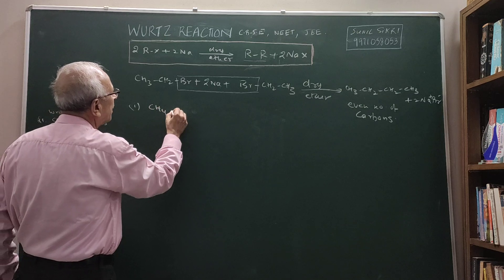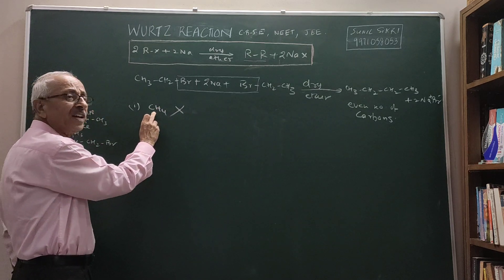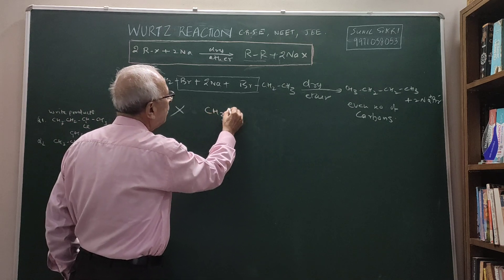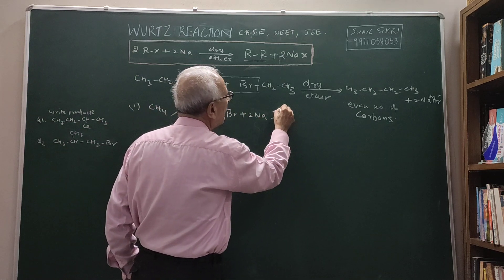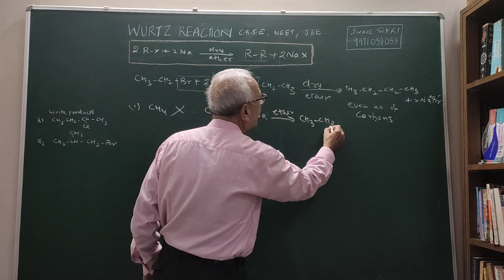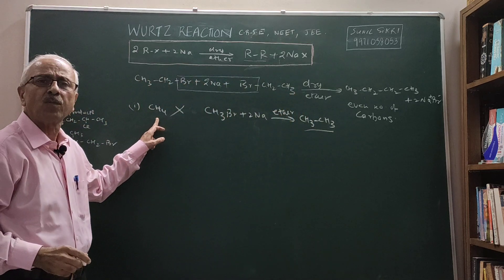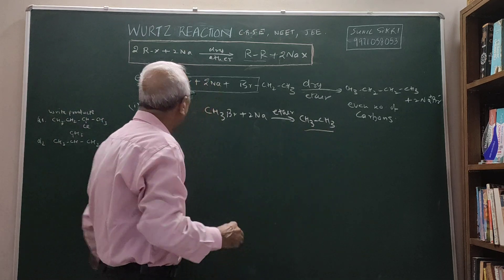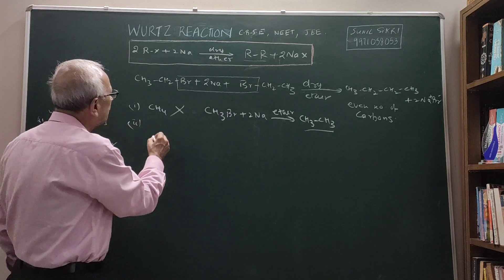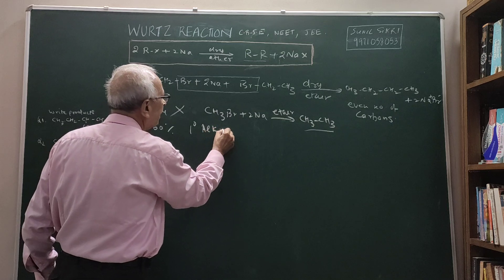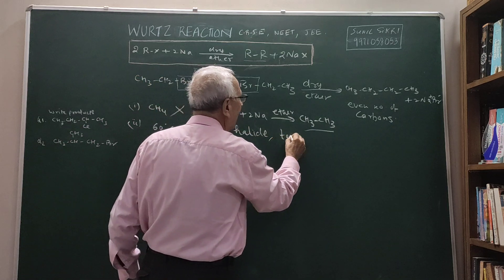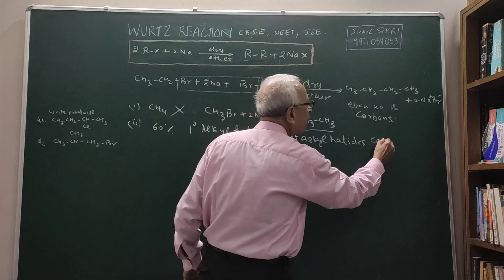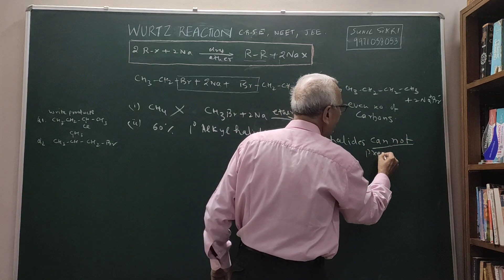Methane cannot be prepared by this method because methane has only one carbon. Whereas when I use CH3Br with sodium in the presence of ether, the product will be CH3CH3. So we get two carbons instead of one. Therefore, it is not possible to prepare methane by this reaction — the minimum product possible is ethane, which has two carbons. Also, the yields are not that good — about 60% yields are obtained for primary alkyl halides. And if I use tertiary alkyl halides, it does not work.